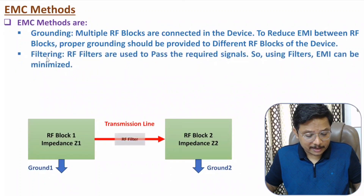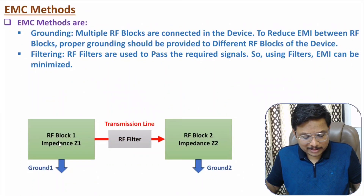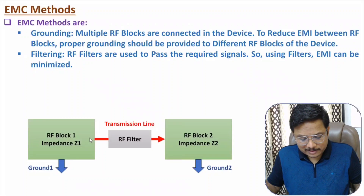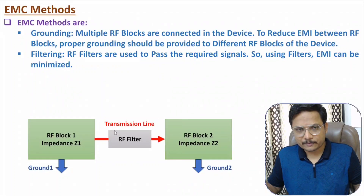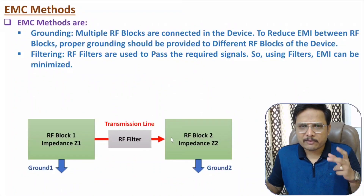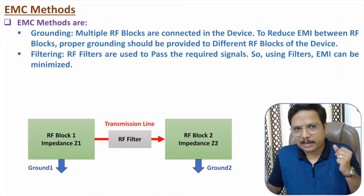The second method is filtering. Here, block 1 is transferring a signal to block 2. If we have an RF signal with some unwanted components coming through, then by using an RF filter between these two blocks we can minimize electromagnetic interference. By using an RF filter, we can allow only the required signal to pass to block 2. So, using filters we can minimize EMI.